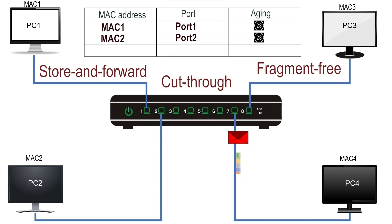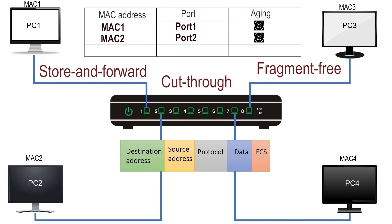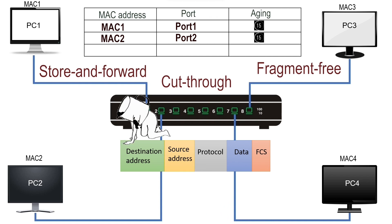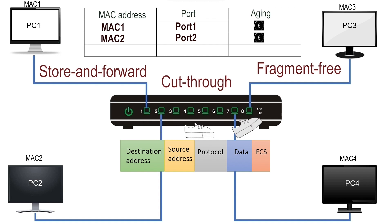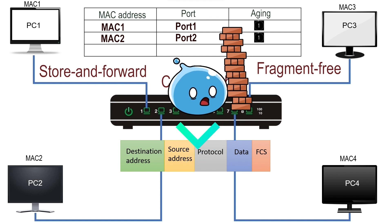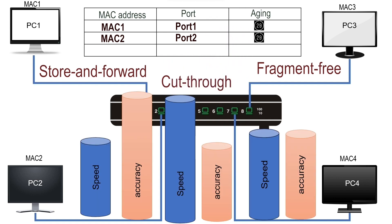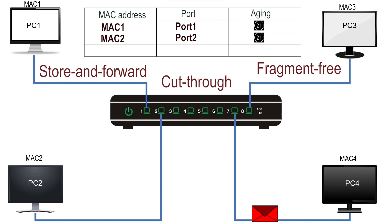In the cut-through method, the switch starts forwarding as soon as the forwarding port is determined. An Ethernet frame stores the destination MAC address in the first field, so the switch can start forwarding the received bits before receiving all bits of the frame. In this method, the switch does not check the condition of the frame before forwarding it. This reduces latency but also propagates errors. Of all three switching methods, this is the fastest, but it forwards some frames that contain errors.